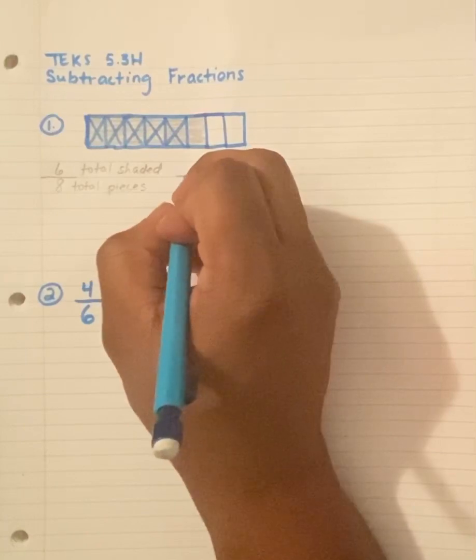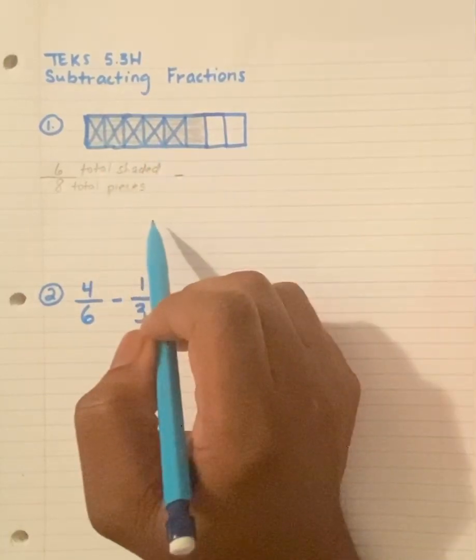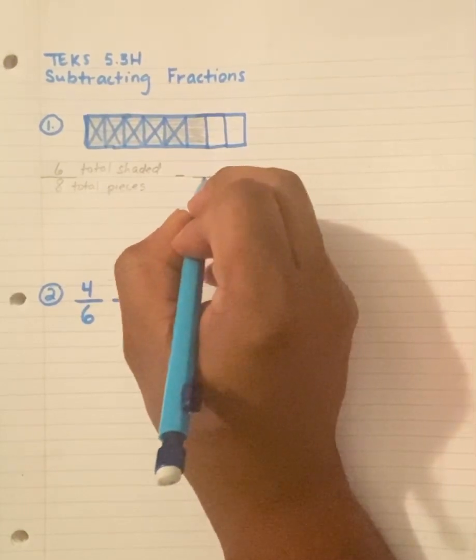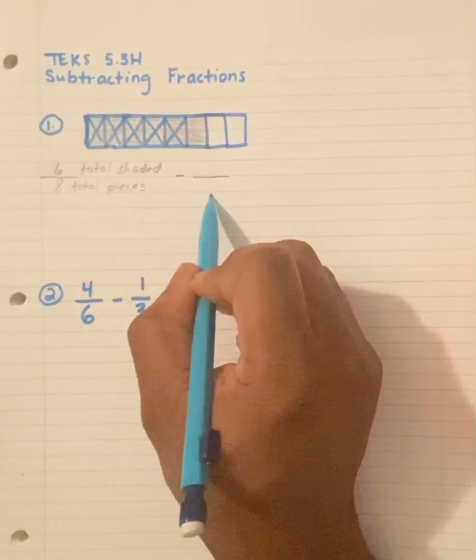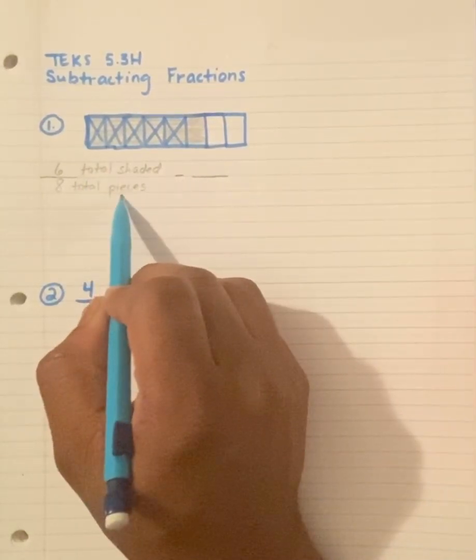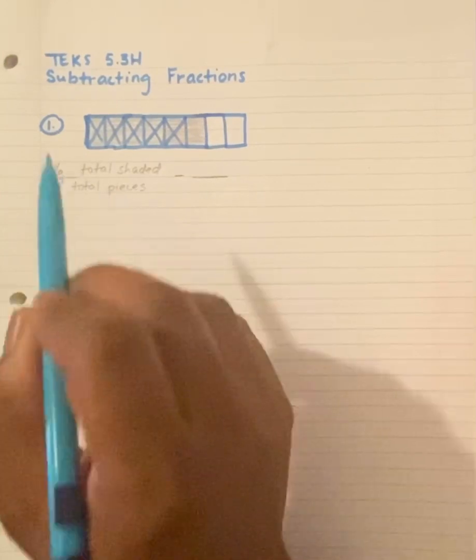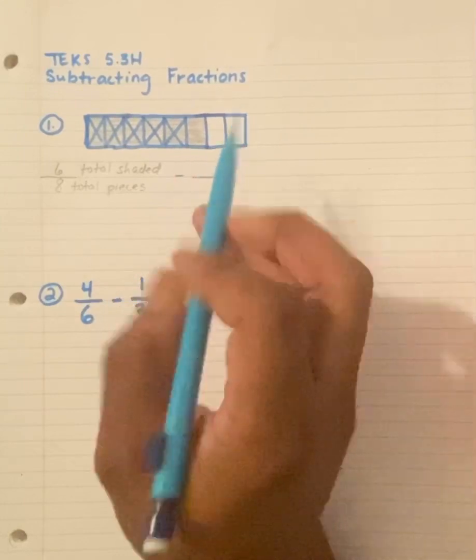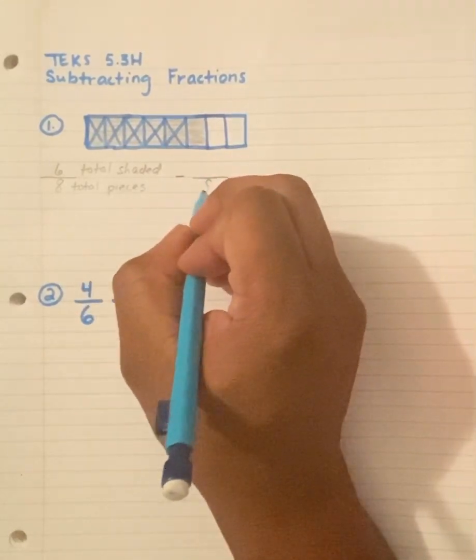But this is also a subtraction problem because I'm seeing Xs. Once again, what's my denominator? What is my total pieces? How many total pieces do I have? 1, 2, 3, 4, 5, 6, 7, 8. I have a total of 8 pieces.